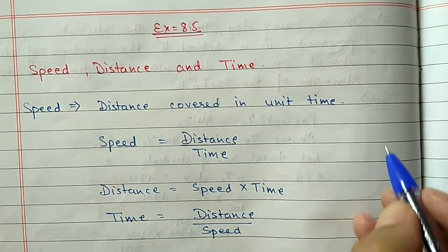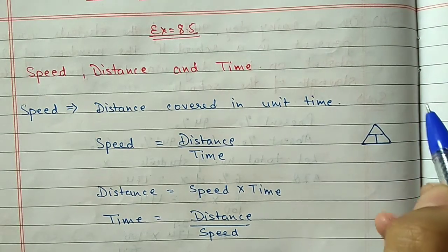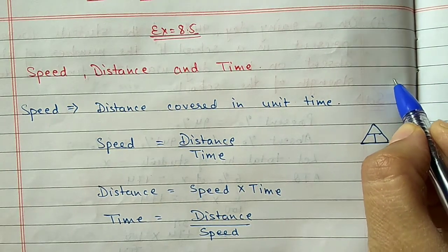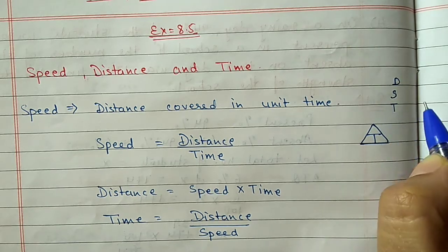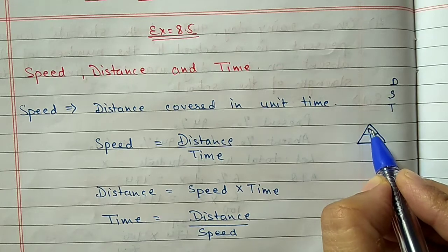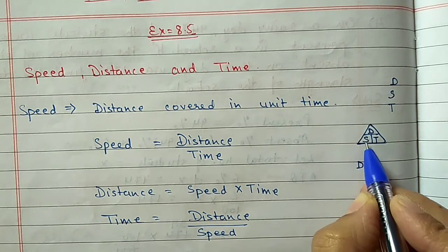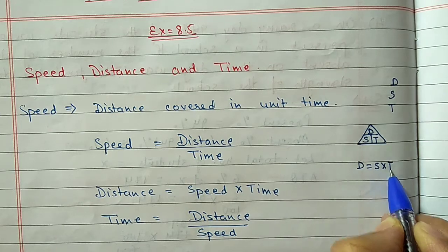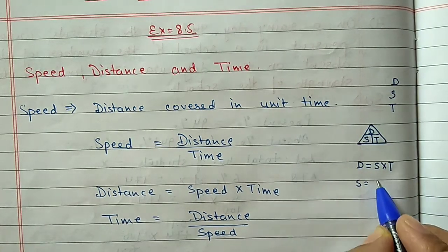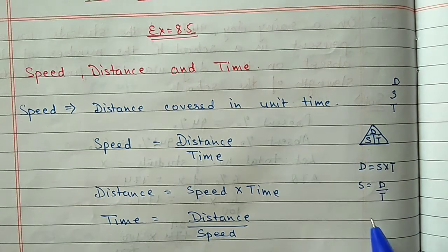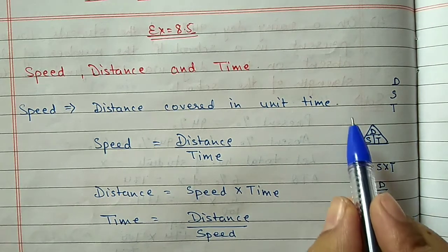You can remember these formulas with a small triangle trick. Write the first letters D, S, and T in alphabetical order in the triangle. If you want distance, S and T are together so multiply S and T. For speed, D is on top and T is below, so speed equals D by T. For time, T equals D by S.